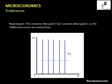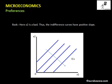Now we will look into the case of bads. We have two commodities, x1 and x2, and x2 is a bad — that is, it gives negative utility to the consumer. As a result, the consumer will be willing to consume less and less of x2. You can see the indifference curves are upward sloping. We already saw in the previous lecture that upward-sloping indifference curves arise when the assumption that more is preferred to less is violated. If x2 is a bad, then obviously less is preferred to more, and as a result the indifference curves are upward sloping.